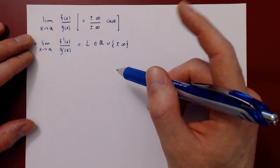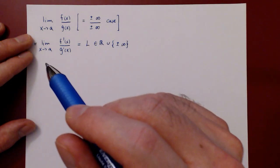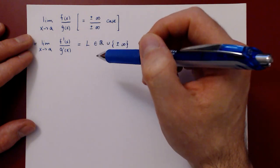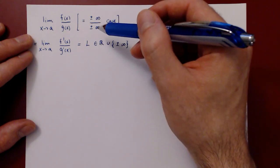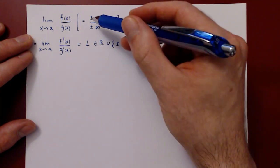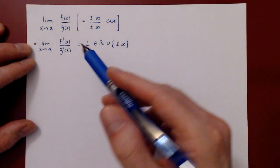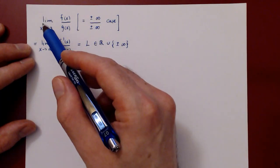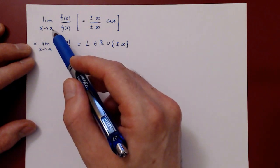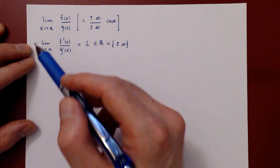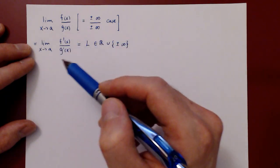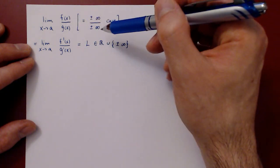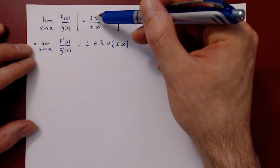L'Hôpital's rule does not only work for a 0 over 0 case, but also for an infinity over infinity case, positive or negative. So the result should look familiar. If we have a limit as x approaches a, some real number, of f over g, and the case is infinity over infinity — positive or negative — that doesn't matter.